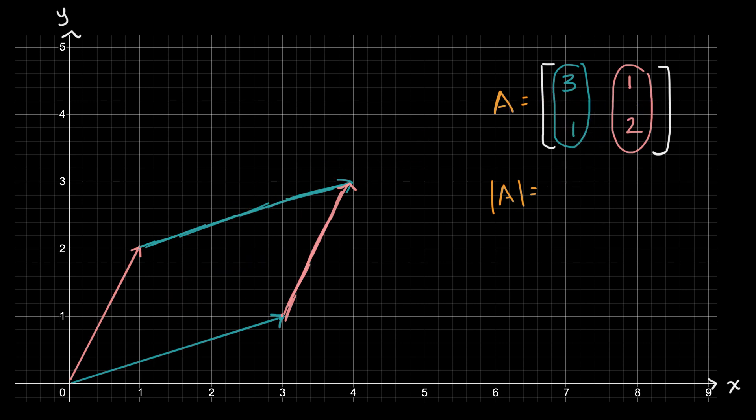So what's that going to be? Well, we know how to figure out the determinant. It is three times two, which is six, minus one times one, which is one, which is equal to five. And of course the absolute value of five is five.